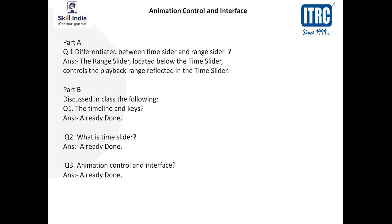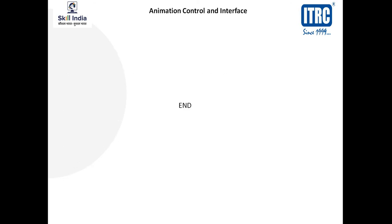The next is timeline and keys — time slider already defined. Animation control and interface: we have discussed all the details about play, pause, previous, next, forward — all the options in the interface. We can see how the preferences changes and control. This is our chapter — we have discussed the controls, how the settings are changed, and all the options in the settings. Thank you.